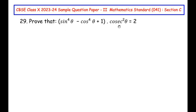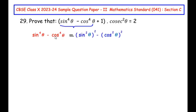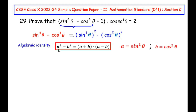So we have to prove that this entire term is equal to 2. First, I'm going to concentrate on only the two terms sin⁴θ - cos⁴θ. These can be rewritten as (sin²θ)² - (cos²θ)², which is the same representation. If we look at these two terms, they resemble the algebraic identity a² - b² = (a+b)(a-b).